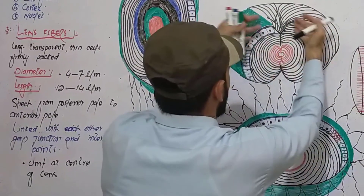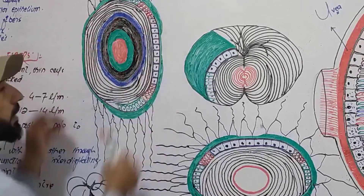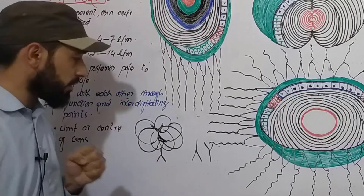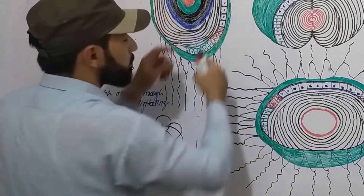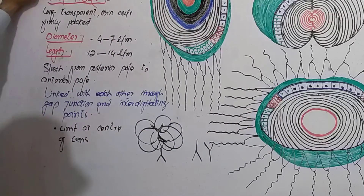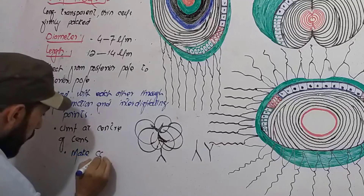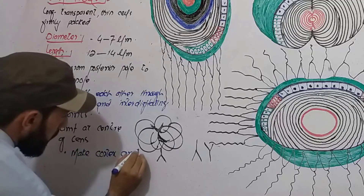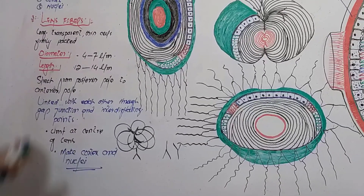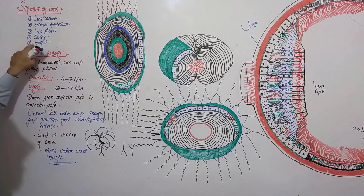All these fibers make a union here at the center of the lens. One very important next point is that these fibers are responsible for making the cortex and the nucleus of the lens, which we will discuss next. This was about the lens fibers — in the next lecture, we will discuss the nucleus and cortex.